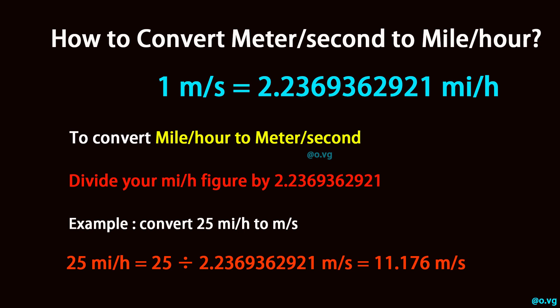Example: convert 25 mile per hour to meter per second. 25 mile per hour equals 25 divided by 2.2369362921 meter per second, which equals 11.176 meter per second.